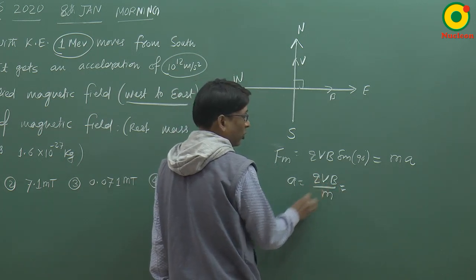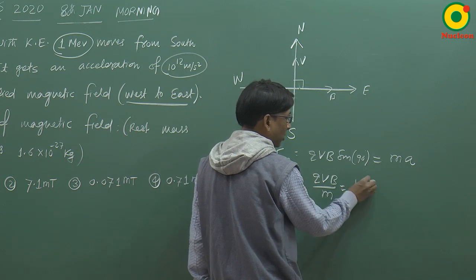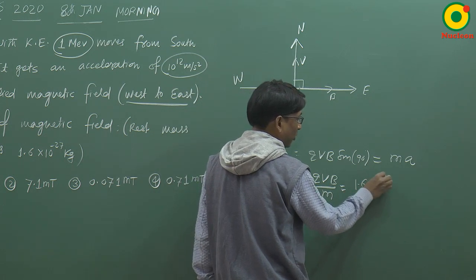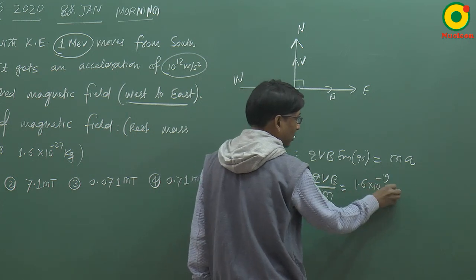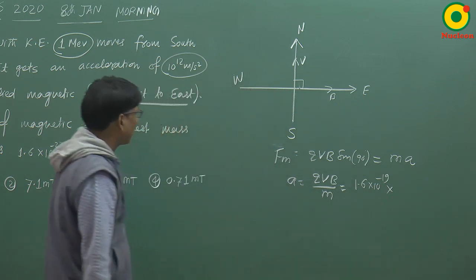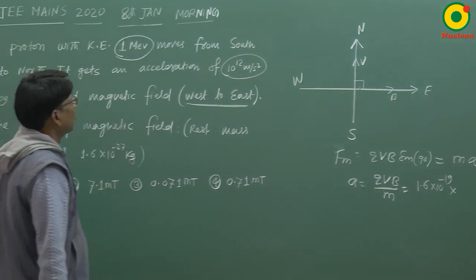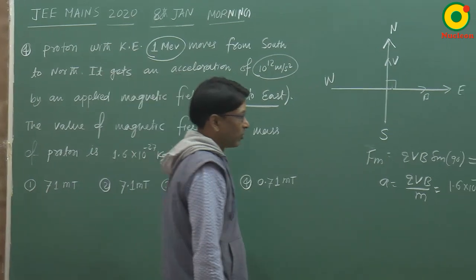Toh joh proton par charge hoota hai, woh hoota hai 1.6 into 10 to the power minus 19. Joh velocity hai, wohan hum nikal saktay hai. Yahaan par kinetic energy diya gaya hai, 1 mega electron volt.